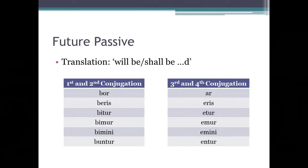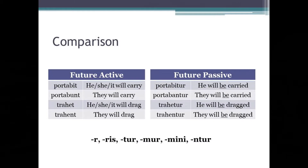So do you spot the pattern between these two sets of endings? They both have the characteristic passive verb endings, which are: -r, -ris, -tur, -mur, -mini, -ntur. So just like we did earlier with present passive infinitives, I would now like you to compare the future active and passive forms. On the left are the normal future active forms — for example, portabit, meaning 'he, she, or it will carry.' And on the right, future passives are translated with the words 'will be,' and they have the characteristic passive verb endings.